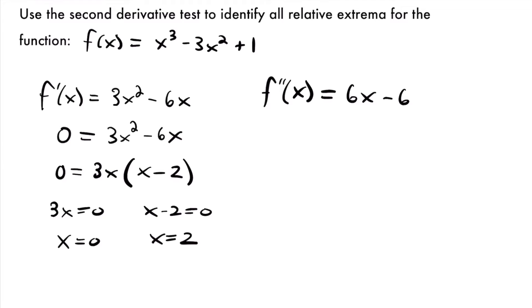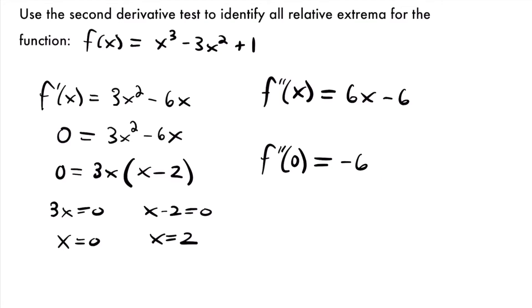Let's start with x = 0. If we plug zero into our second derivative, we'll have f''(0) = 6(0) - 6, which equals negative 6. That is a negative value, so that tells us that x = 0 is going to be a relative maximum. If you have a negative value, you're going to have a relative max. Think about it like this: when you have a negative value for your second derivative, that means your function is concave downward in that area, shaped like an upside-down curve, which means the point where the slope is zero is going to be the maximum in that area.